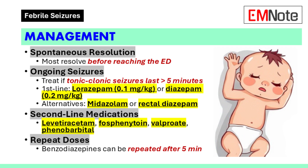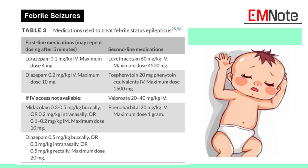Most febrile seizures resolve spontaneously before reaching the emergency department. For ongoing tonic-clonic seizures lasting more than 5 minutes, an anticonvulsant drug should be administered. Treatment of febrile status epilepticus follows the same protocol as non-febrile status epilepticus. Intravenous lorazepam at 0.1 mg per kg (max 4 mg) and diazepam at 0.2 mg per kg (max 10 mg) have similar rates of seizure cessation. If intravenous access is unavailable, midazolam at 0.3–0.5 mg per kg buccally, 0.2 mg per kg intranasally, or 0.1–0.2 mg per kg intramuscularly (max 10 mg), or diazepam at 0.5 mg per kg buccally, 0.2 mg per kg intranasally, or 0.5 mg per kg rectally (max 20 mg) are alternatives.